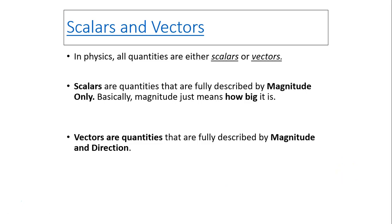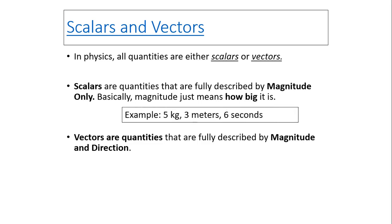Scalars and vectors. In physics, all quantities are either scalars or vectors. Scalars are quantities that are fully described by magnitude only — magnitude just means how big it is. For example, 5 kilograms indicates how big the mass is, 3 meters indicates how big the distance is, and 6 seconds indicates how long the time duration is.